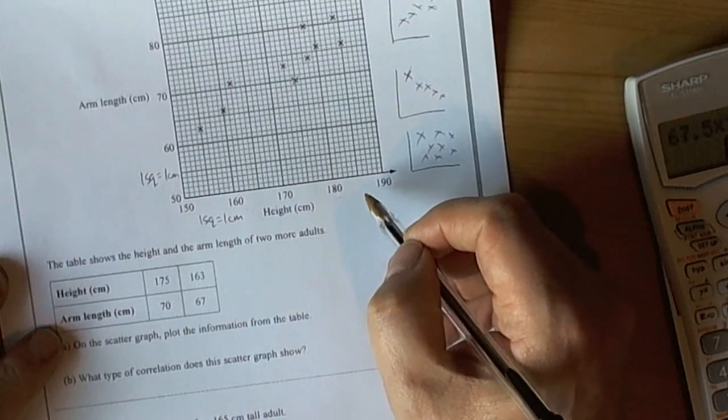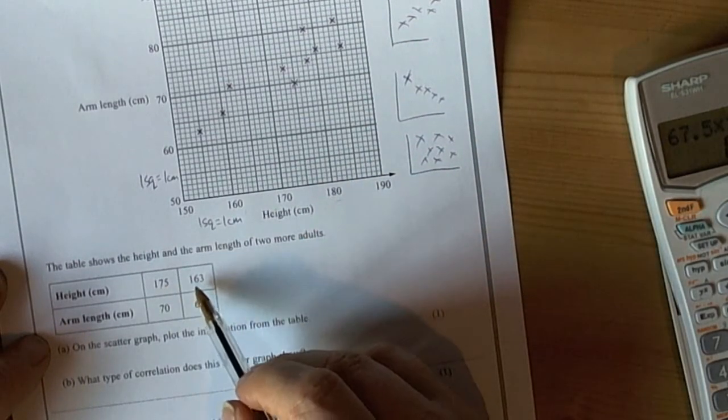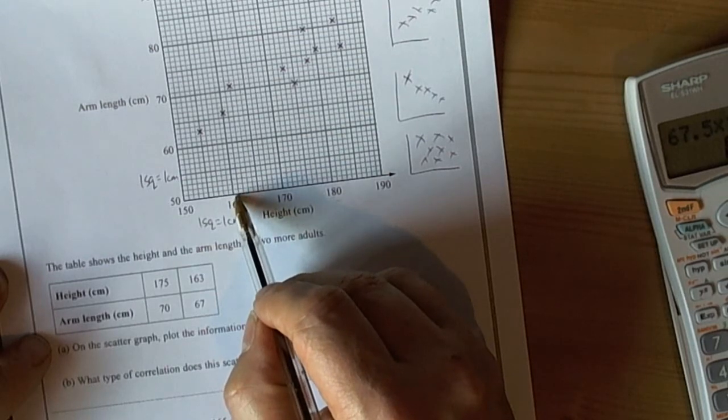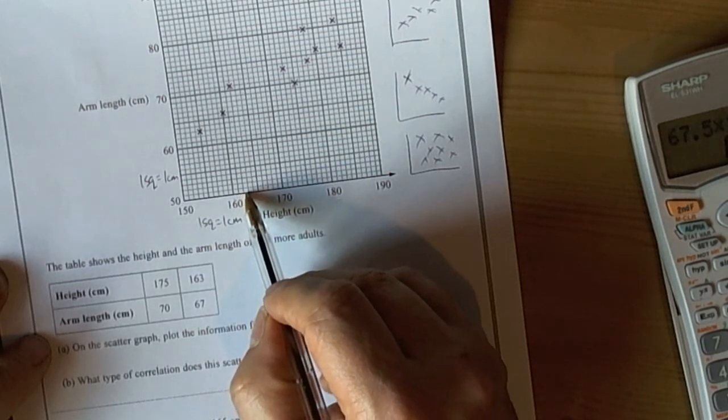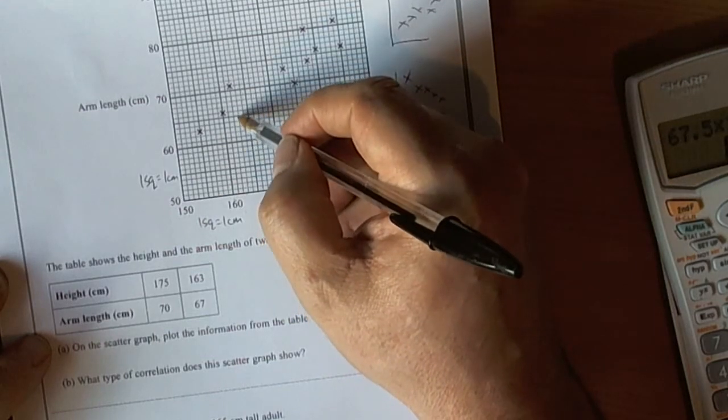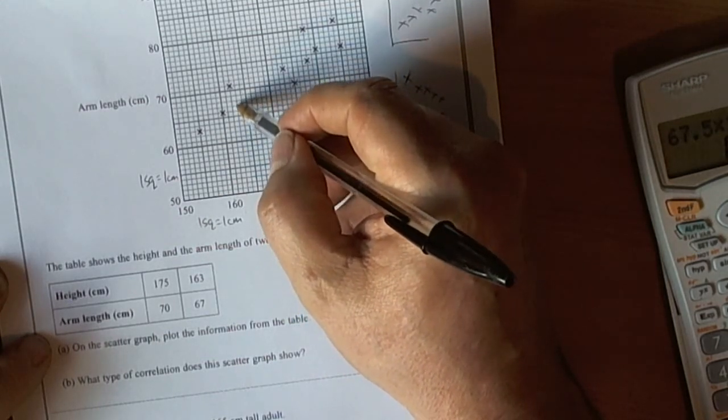And then we've got to go 163, so again being careful we've got to 160, 161, 162, 163. And they want us to go to 67. So 60, 65, 66, 67.